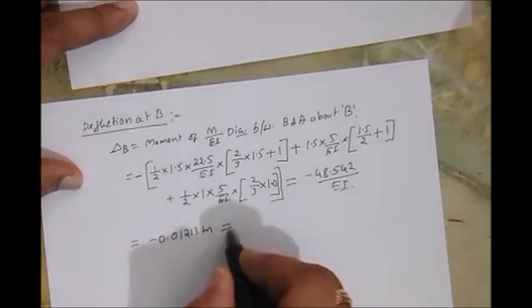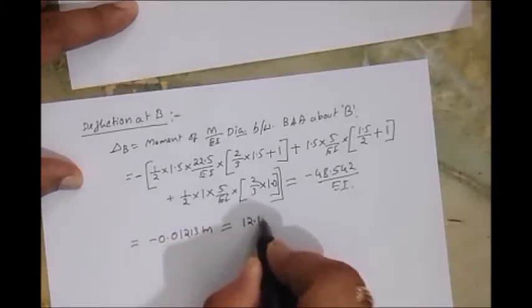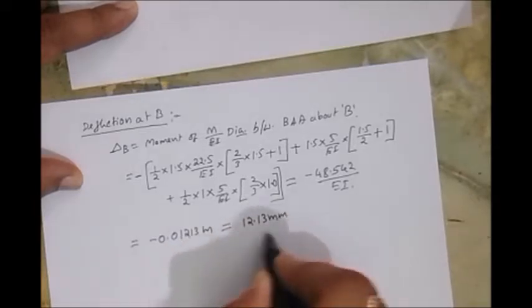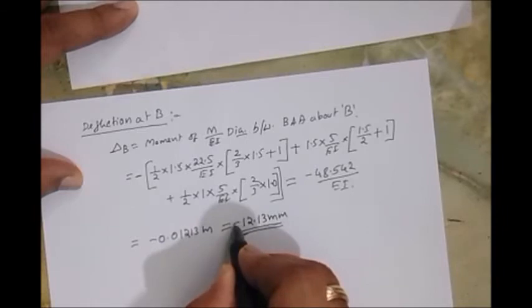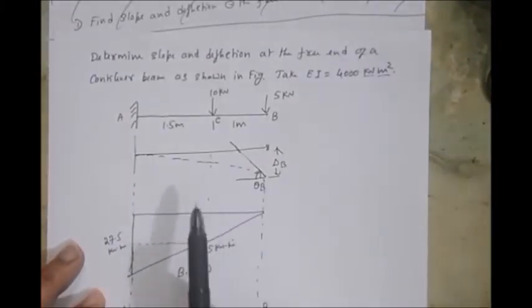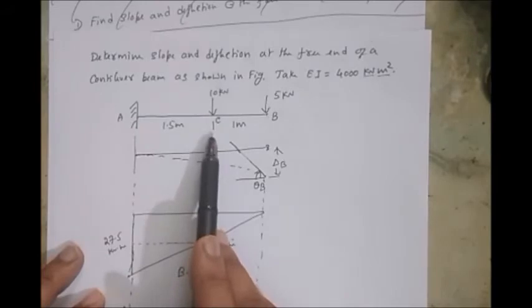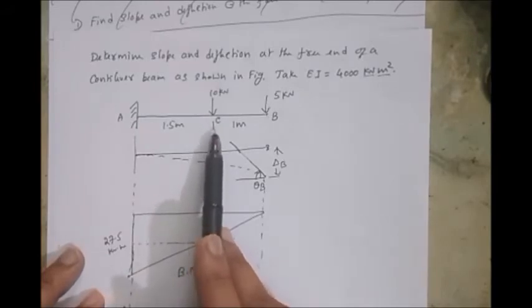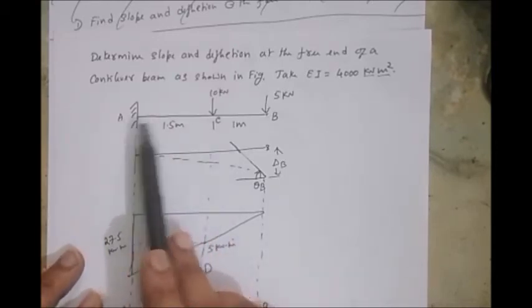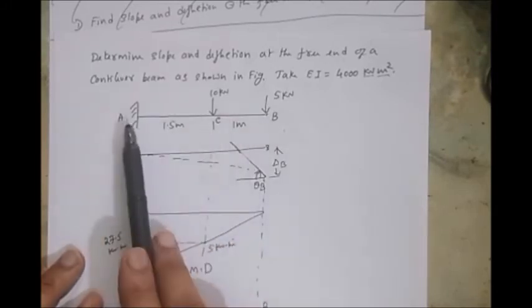You will get 12.13 mm. Answer is minus. Okay, so let's find the slope at C for the same problem. We need to have a two reference point. Another reference point I'll take A only, as in the case of the slope at B.